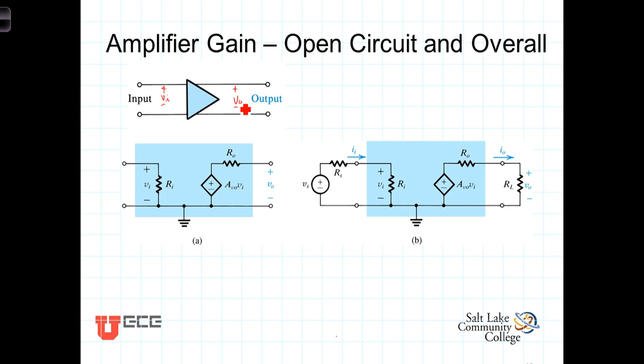We can model that operation in terms of a dependent source, a source at an output that is dependent upon some input signal. In this case, we've got an input voltage V_i referenced across some modeled input resistance, and then at the output we have this dependent voltage source with an open circuit gain A_v0, so that the voltage source has the value of A_v0 times this input voltage.